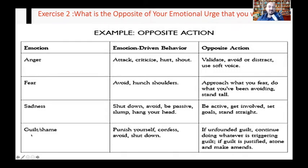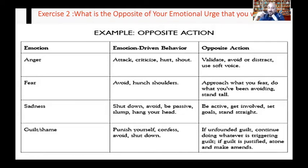The same applies to guilt and shame, especially for people with depression. The expected behavior from guilt and shame is self-destructive behavior, shutting down, avoidance, and punishing yourself. Do the opposite: if the guilt is unjustified, continue whatever you are doing. If the guilt is justified, stop and make amends — don't dwell in the guilt and shame.